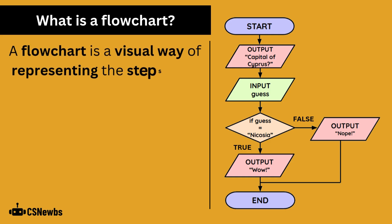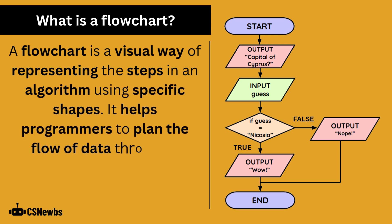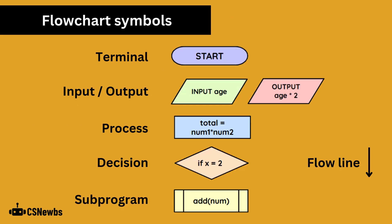A flowchart is a visual way of representing the steps in an algorithm using specific shapes. It helps programmers to plan the flow of data through a program and communicate to others how it will work. There are five flowchart shapes you need to know.